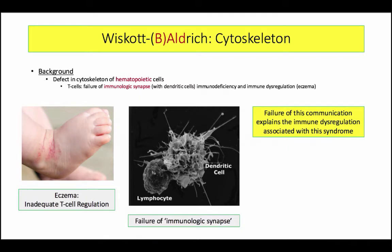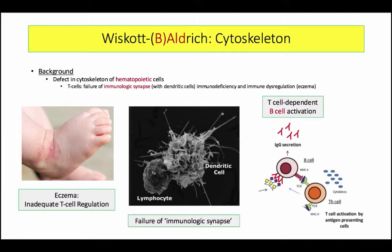We have inadequate T cell regulation — how does that manifest? Eczema. Be prepared for a clinical description of eczema: it will be described as a dry, pruritic, erythematous rash. Be aware they may not tell you directly that the baby has eczema. Besides T cell failure and dysregulation, Wiscott-Baldridge is also associated with B cell failure. Recall that T cells directly activate B cells, as well as indirectly through release of cytokines, so the failure of T cells causes a consequent failure of B cells.